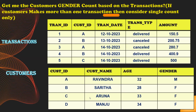For example, here there are two tables: a transactions table and a customers table. In the customers table we have multiple columns: customer ID, customer name, age, and gender. Customer IDs are A, B, C, D and customer names are Ravinda, Sarita, Aruna, and Manju. Ravinda is male and the remaining three are female. In the transactions table, customer ID is a foreign key, while in the customers table it is the primary key.